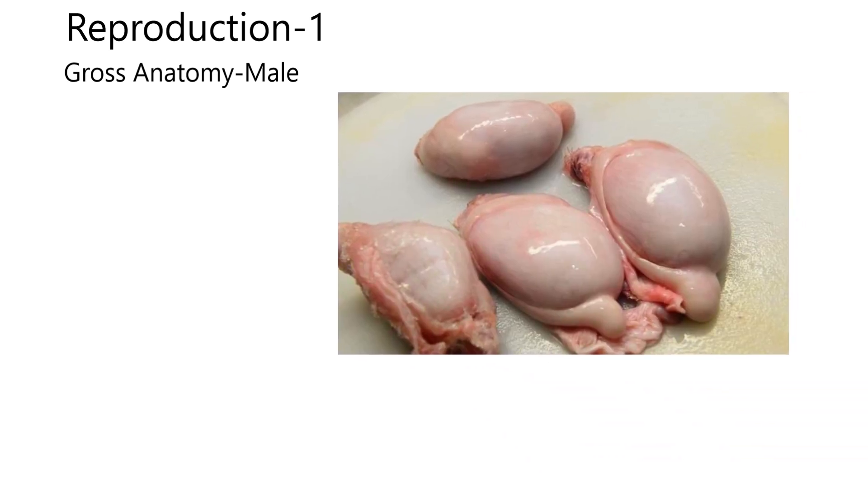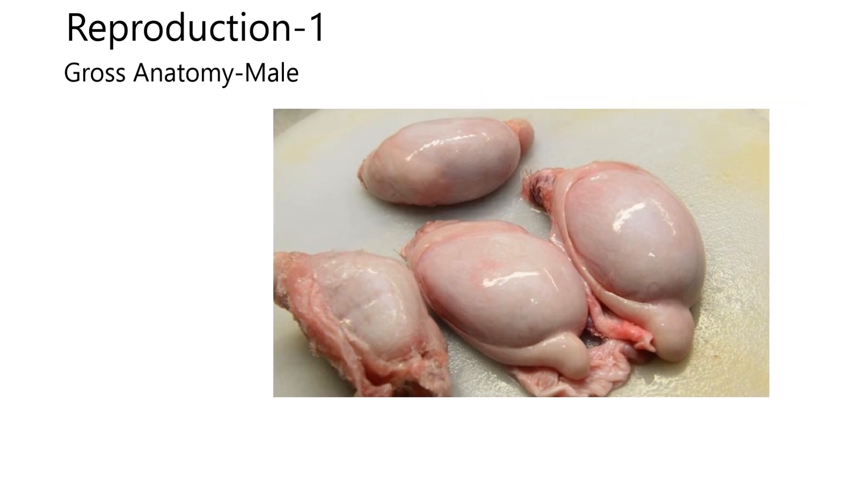I've got this image here of testicles to show you to start out here, gross anatomy. During the castration process, depending on if you're talking about dogs, cats, horses, cattle, whatever, the testicles are taken out. There's usually two in the scrotum.